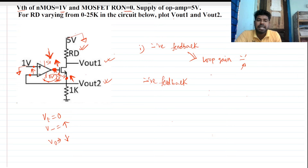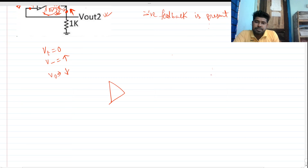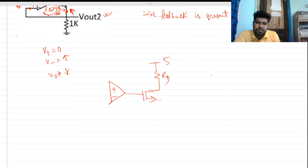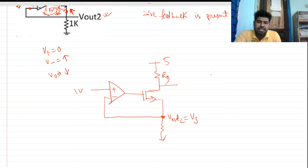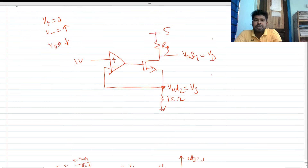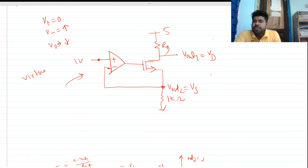Negative feedback is present in this circuit. This makes the problem easier to solve. Let me redraw the circuit: this is a negative feedback circuit with Vout2 at the source of the MOSFET (Vs), Vout1 at the drain (Vd), and a 1kΩ resistor. With negative feedback, the virtual short concept applies, so the inverting and non-inverting terminals of the op-amp are at equal potential.